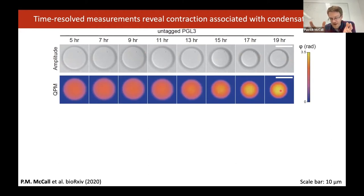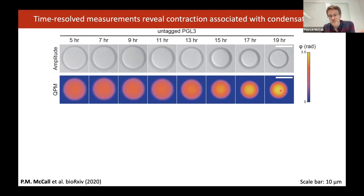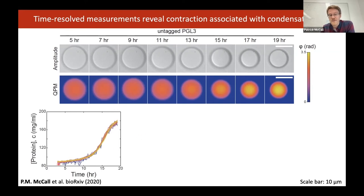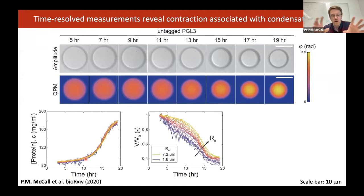Overlaying 25 different droplets from different fields of view during this time course, we see they're all in lockstep with this increase in protein concentration over a factor of two. Interestingly, depending on the volume of these droplets, the dynamics were a little bit different — larger droplets would shrink a little bit slower than smaller droplets. The fraction of molecules decreased, but not by too much — typically by less than half — meaning that most of the protein material was remaining intact. It's just that the matrix was shrinking and water was being expelled out.